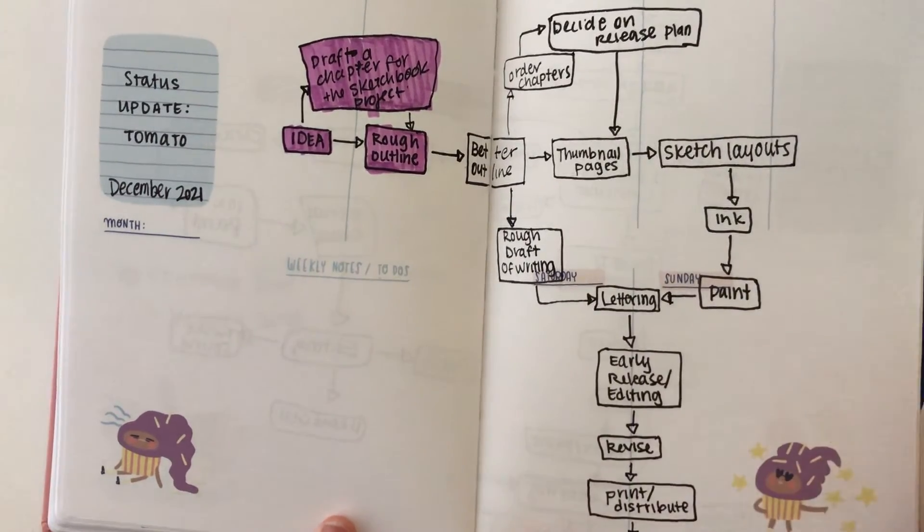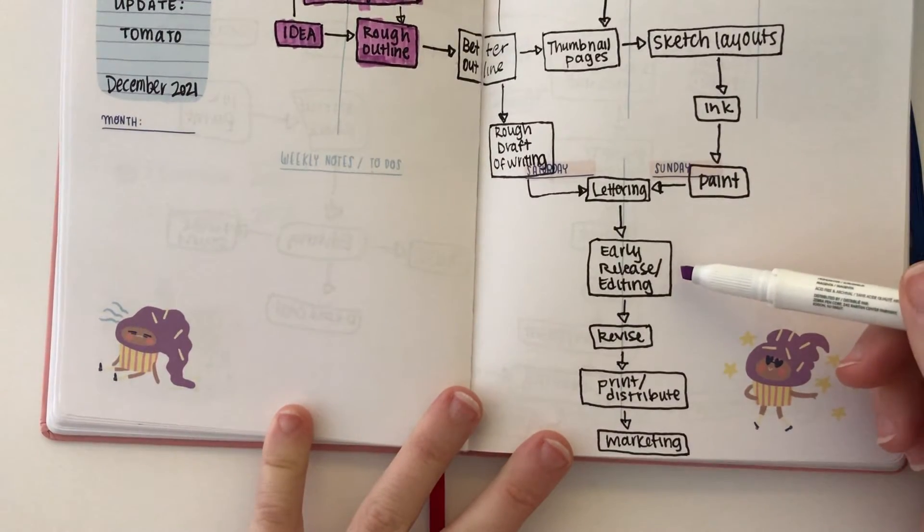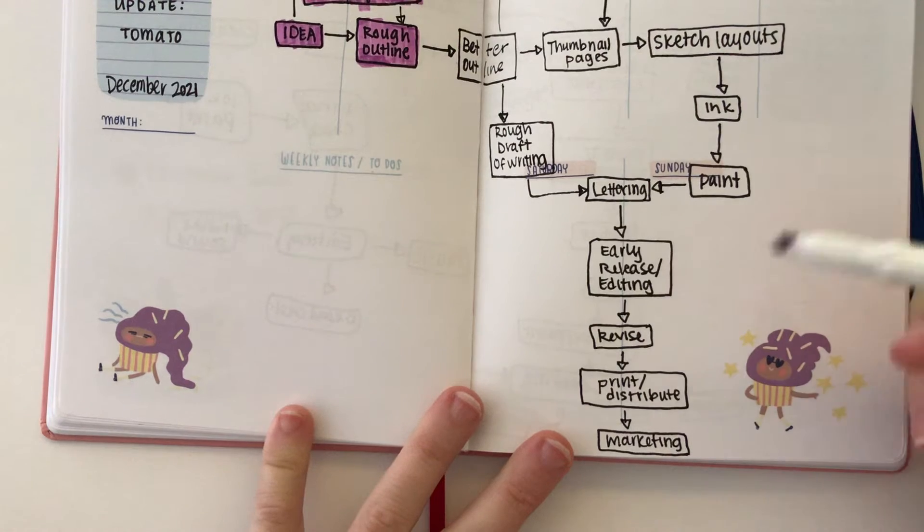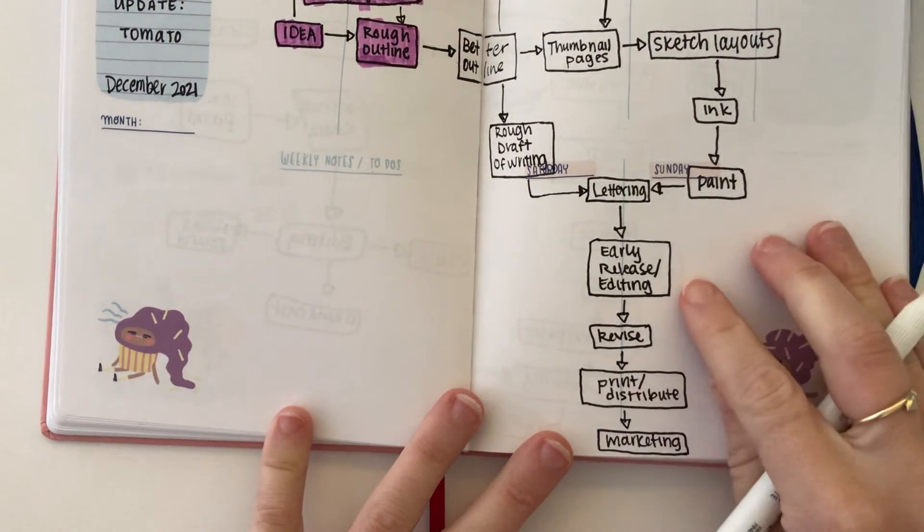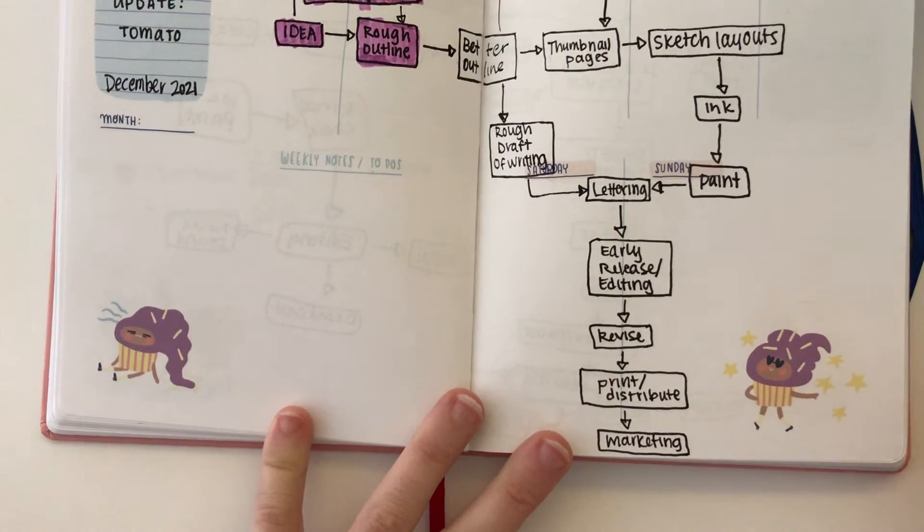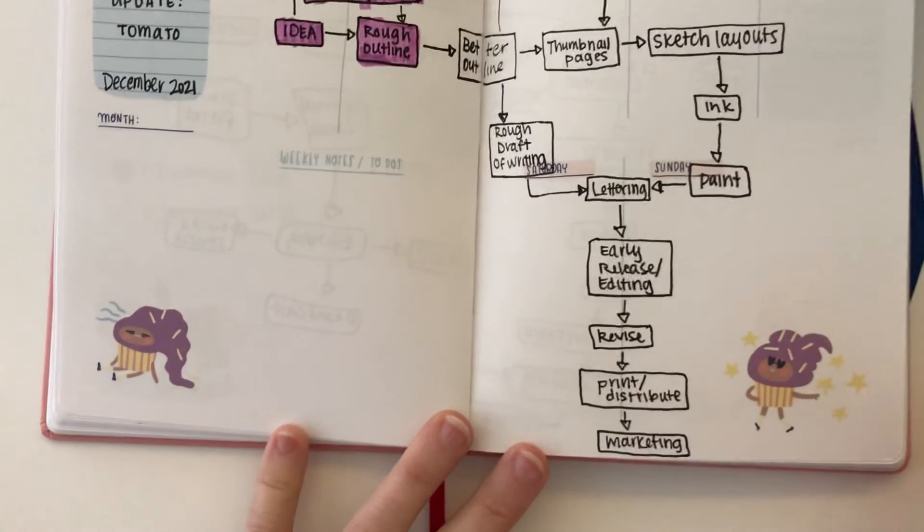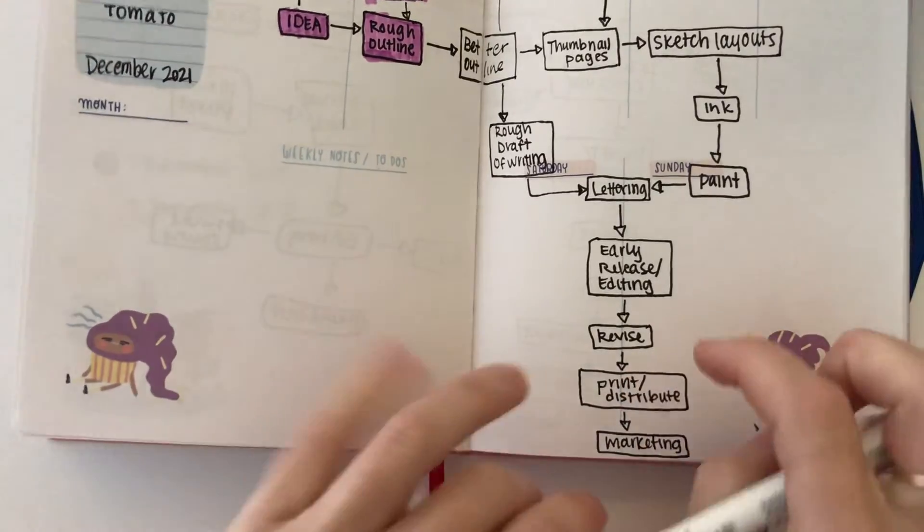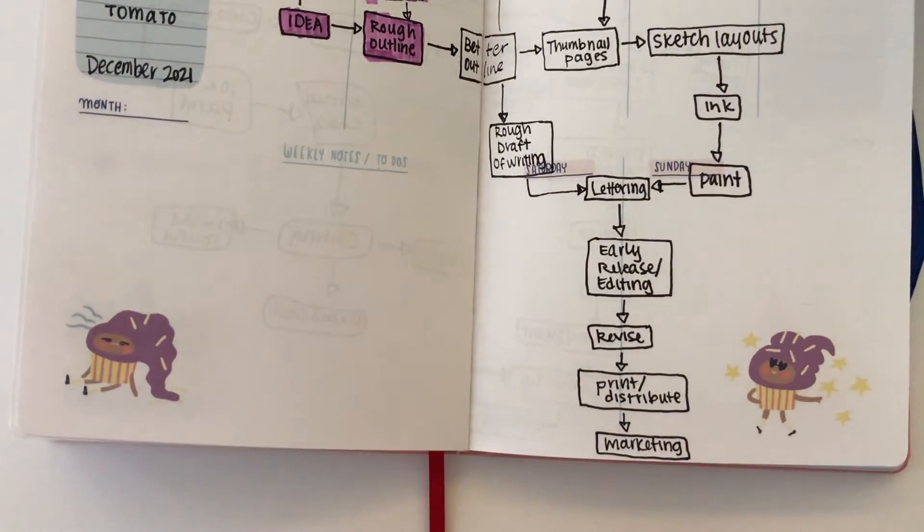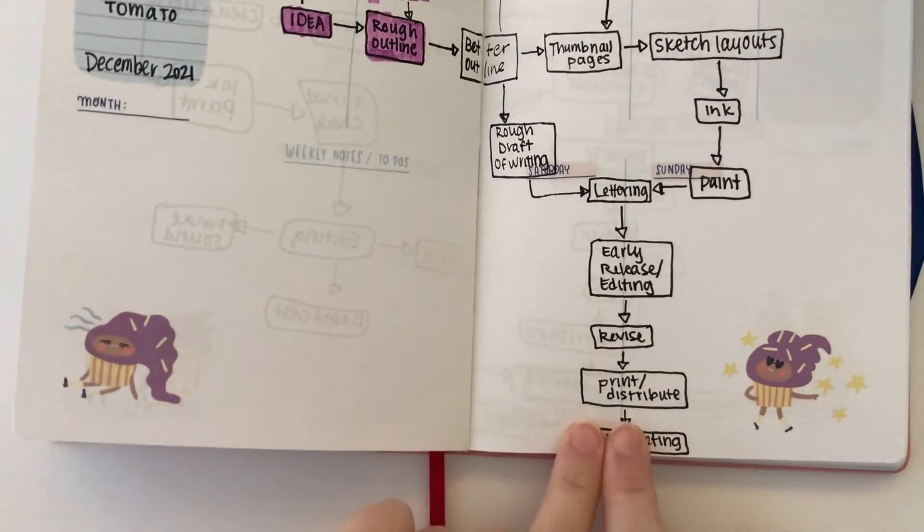Once I have the layouts and the writing done, I think I'll go back in and do the lettering. And then we're going to figure out an early release is my plan. I like the idea of sending it to a few people, early adopters let's call them. So we're going to send it to a few early adopters to get their feedback and possibly make even some revisions here based on their notes before we go into printing it, distributing it, and marketing it.